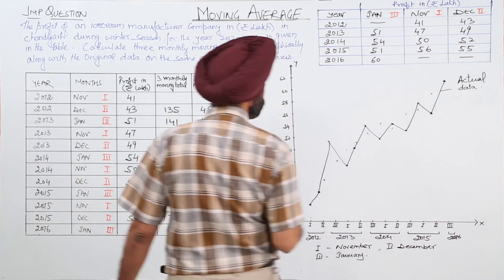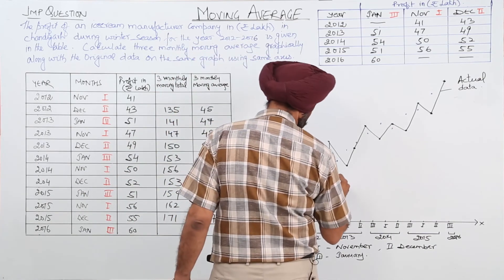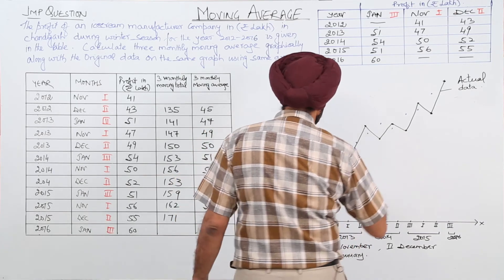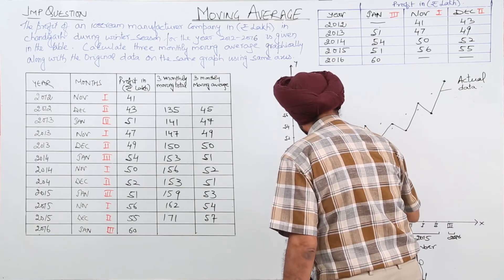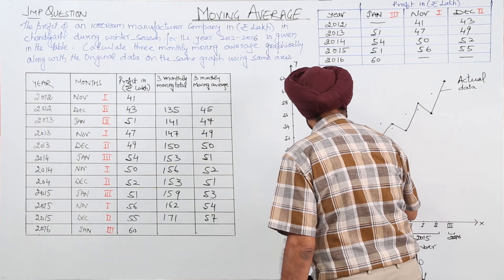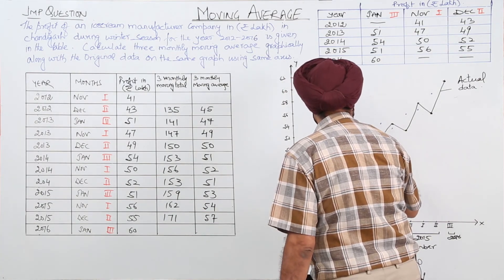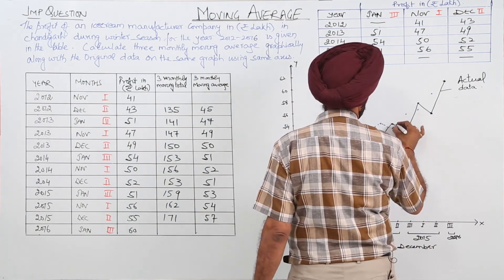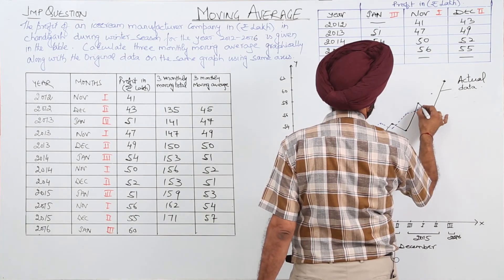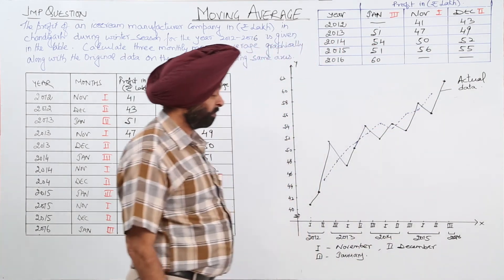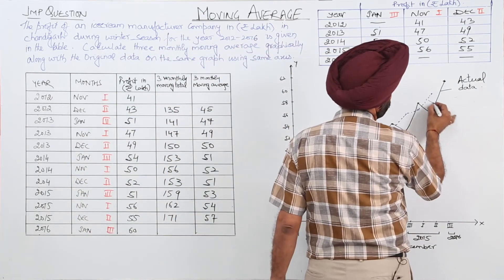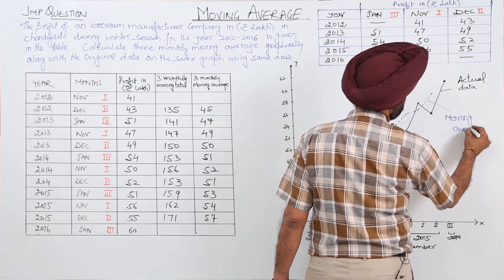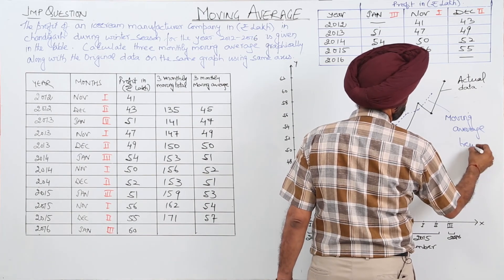So now let's join this one. Like this. So this is what? In blue, this is the moving average. Or you can write a trend.